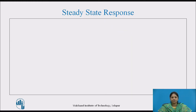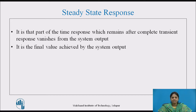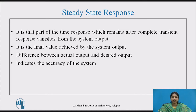Let's see the steady state response. It is that part of the time response which remains after the complete transient response vanishes from the system output. The steady state response is generally the final value achieved by the system output. Its significance is that it tells us how far the actual output is from its desired value. The steady state response indicates the accuracy of the system. The symbol for steady state output is C_S.